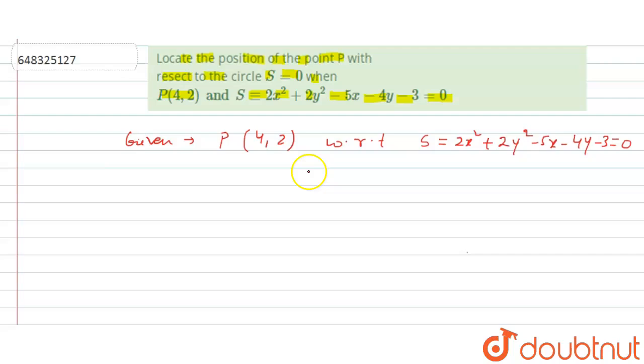Basically this question is asking if we have a circle, we have to find that this point P is lying inside the circle, outside the circle, or maybe the point lies on the circle. We need to find out that thing.